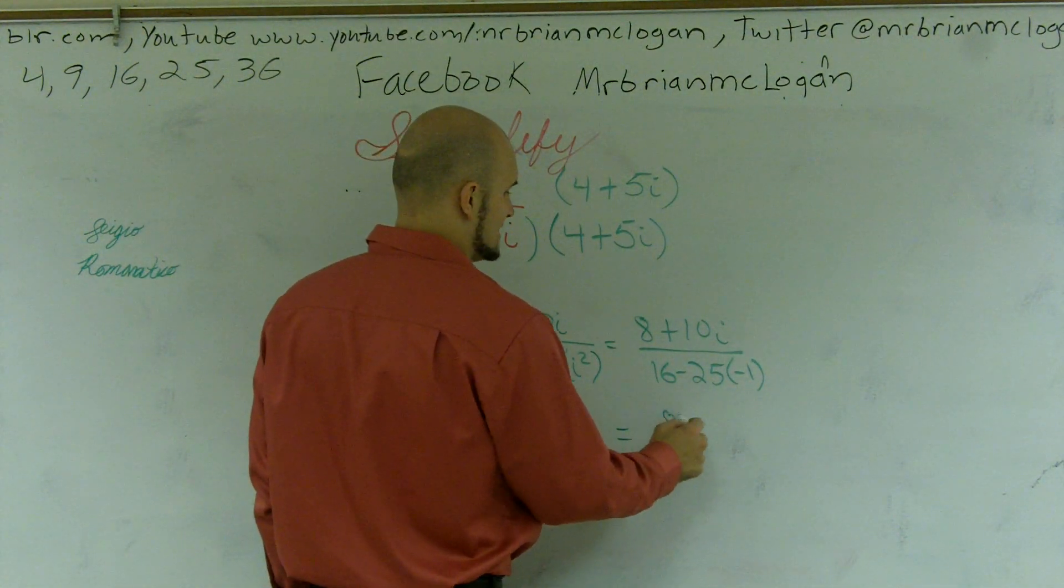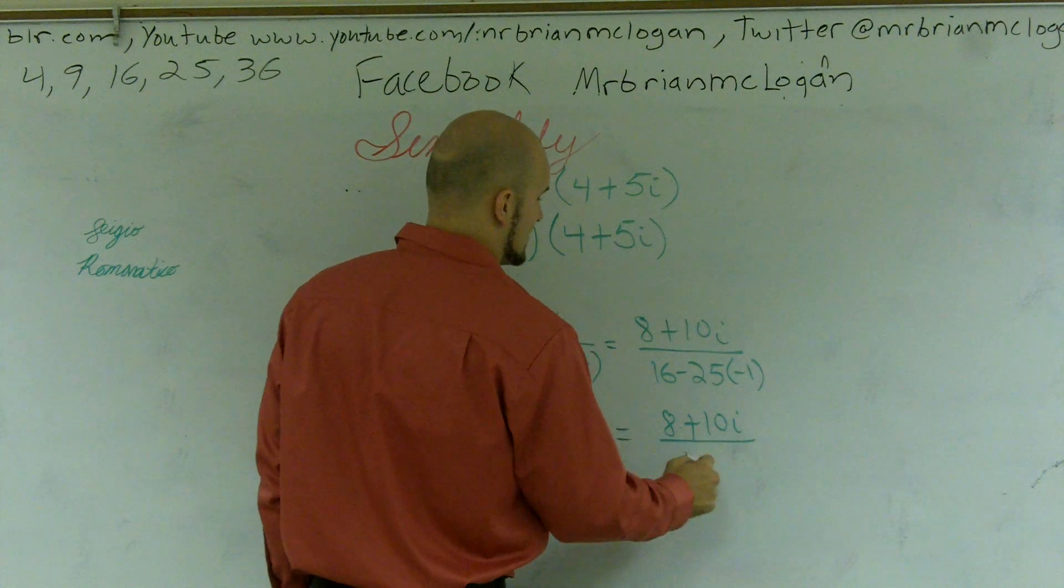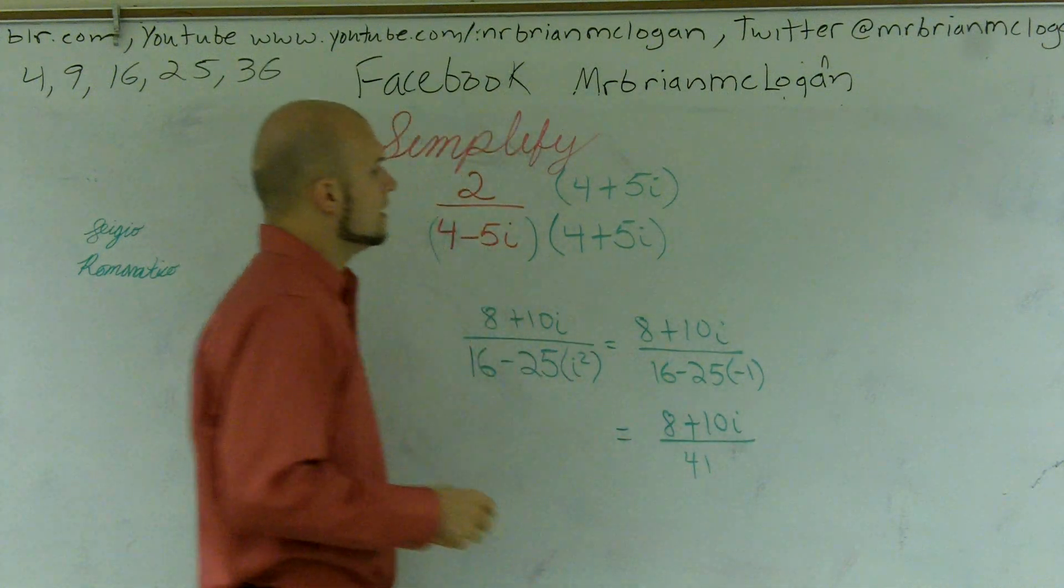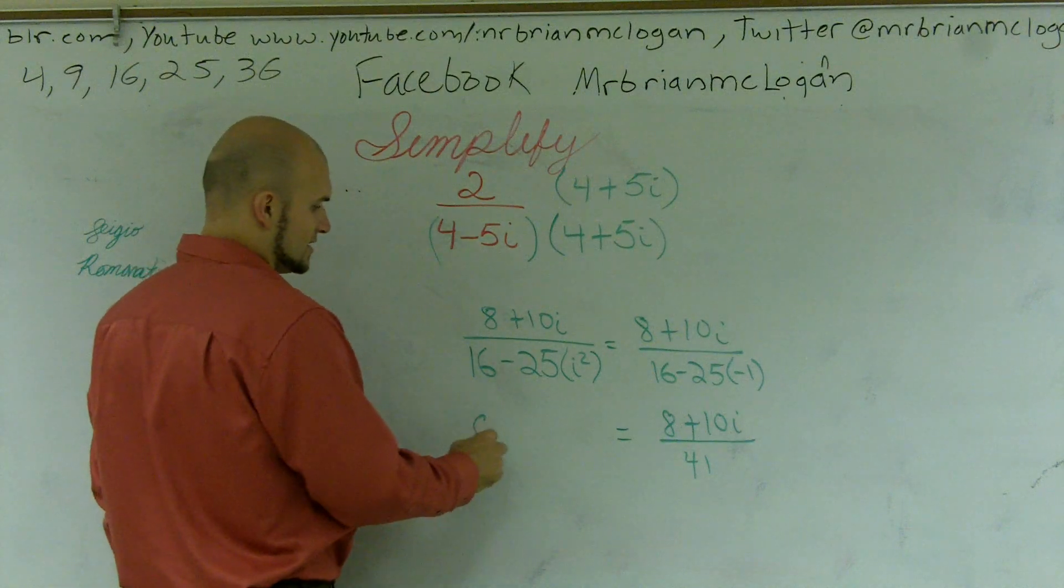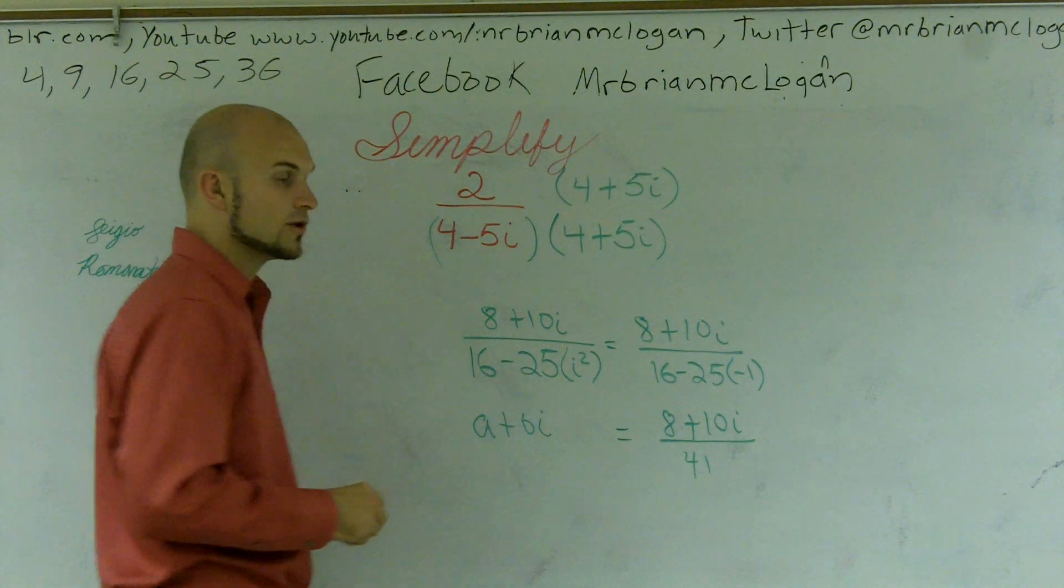So therefore, I'm left with 8 plus 10i divided by 41. However, when we're talking about complex numbers, we need to write it in the form a plus bi, which we call standard form.